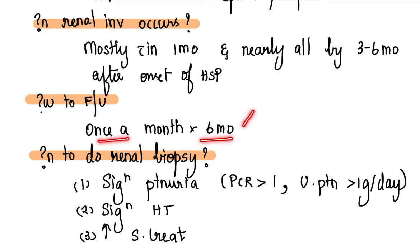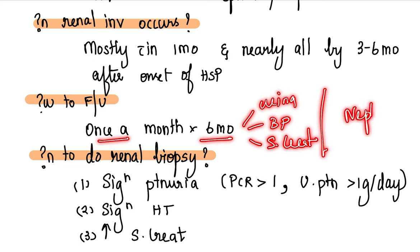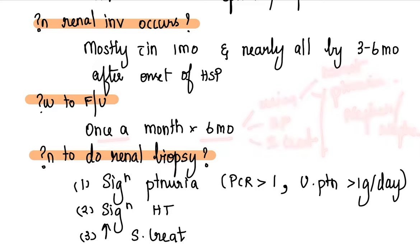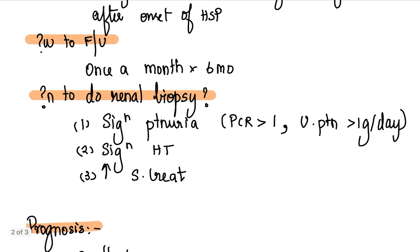Once a month for six months, you will do urine analysis, you will do BP measurement, you will do serum creatinine measurement to make sure they are not having a nephritic or a nephrotic component. In urine analysis, you will be specifically looking at hematuria and proteinuria. Suppose a patient has severe renal involvement, when do you do a renal biopsy?